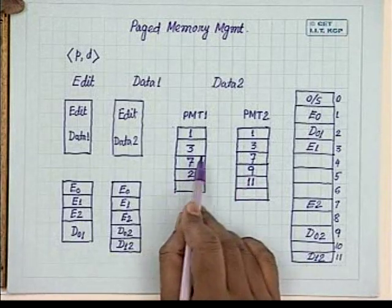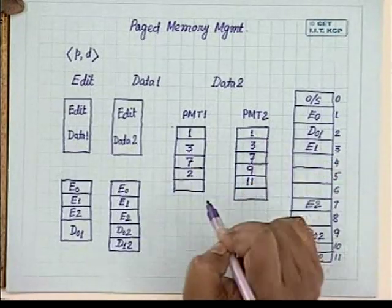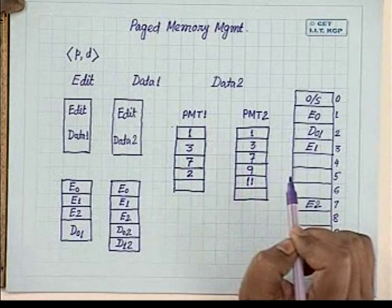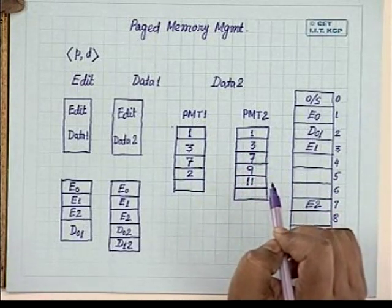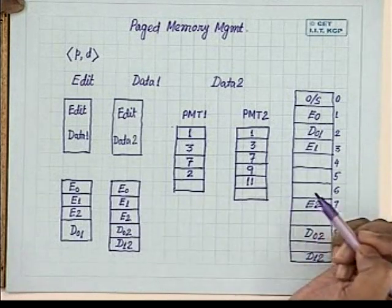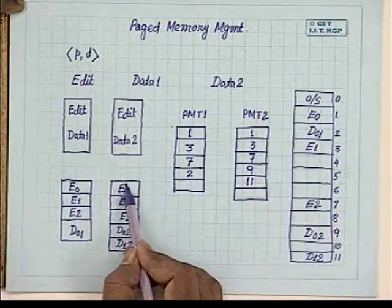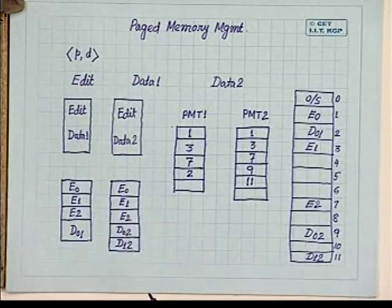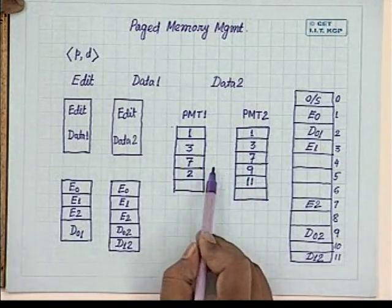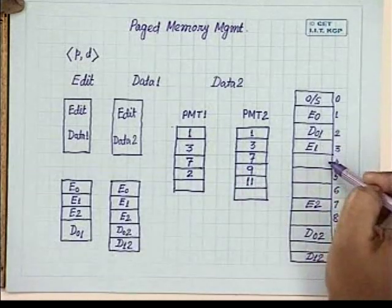With these page map tables, the first three pages are actually shared by user program 1 and user program 2. The restriction for allowing such sharing is that the code must be re-entrant — it should not be self-modifying. If a program modifies itself during execution, it cannot be shared, because the modification required for user 1 may not be desired for user 2. If the code is not self-modifying, it can be shared among any number of users.